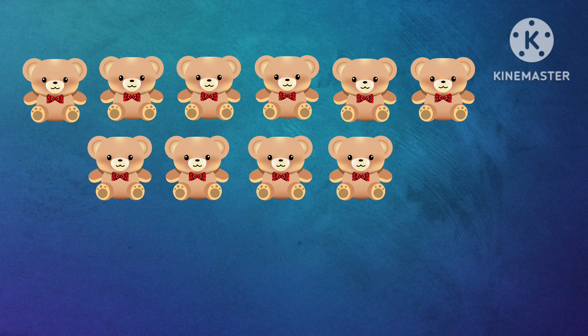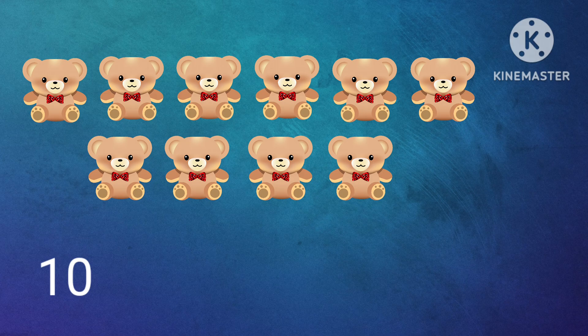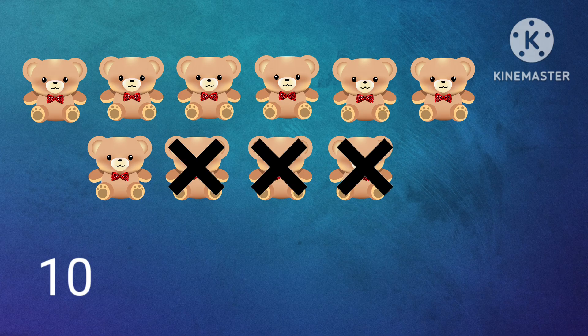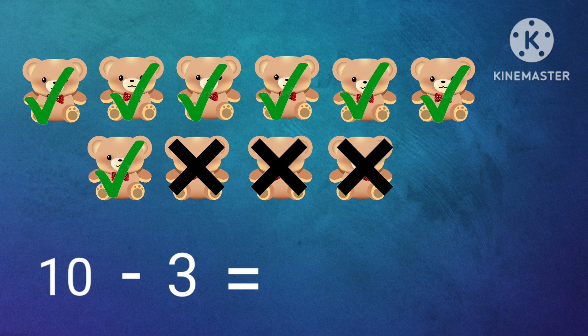How many are here? Shall we count? 1, 2, 3, 4, 5, 6, 7, 8, 9, 10. There are 10 teddies. In 10 teddies, we have taken 3 teddies. So how many we have now? Shall we count? 1, 2, 3, 4, 5, 6, 7. There are 7 teddies. So 10 minus 3 equal to 7.